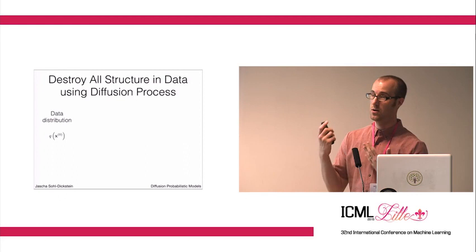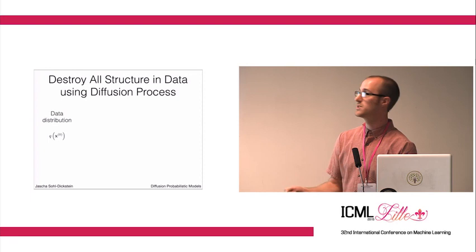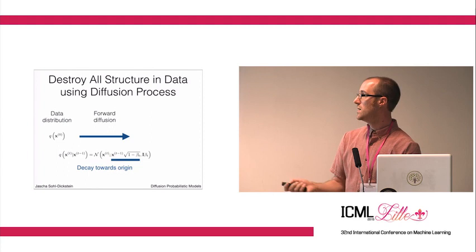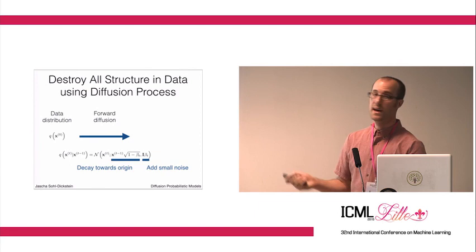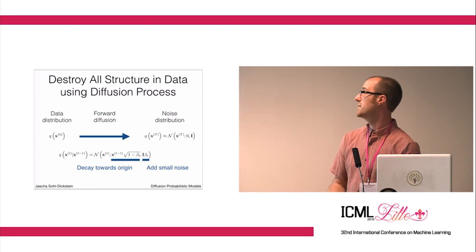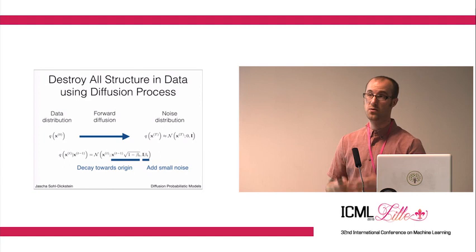Our process here was we started at our training distribution and ran a Gaussian diffusion process where each step involved decaying the previous data point slightly towards the origin so the variance doesn't run away to infinity and then mixing in a small amount of Gaussian noise. If we do this over and over again enough times, we eventually end up at a noise distribution with identity covariance matrix centered at the origin.